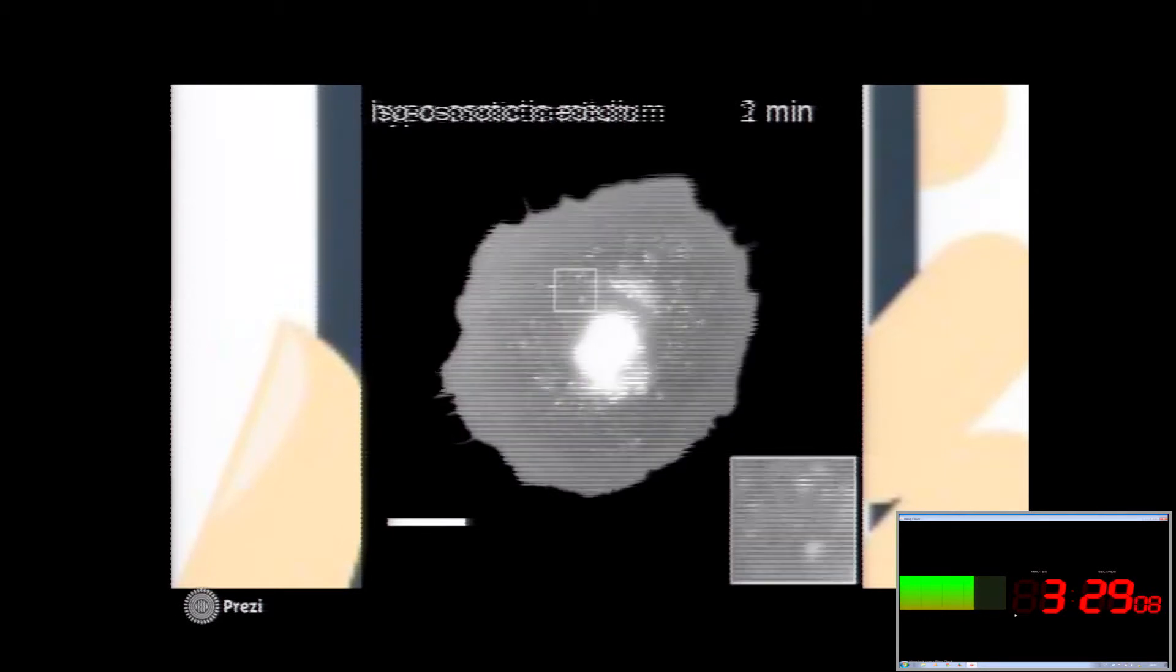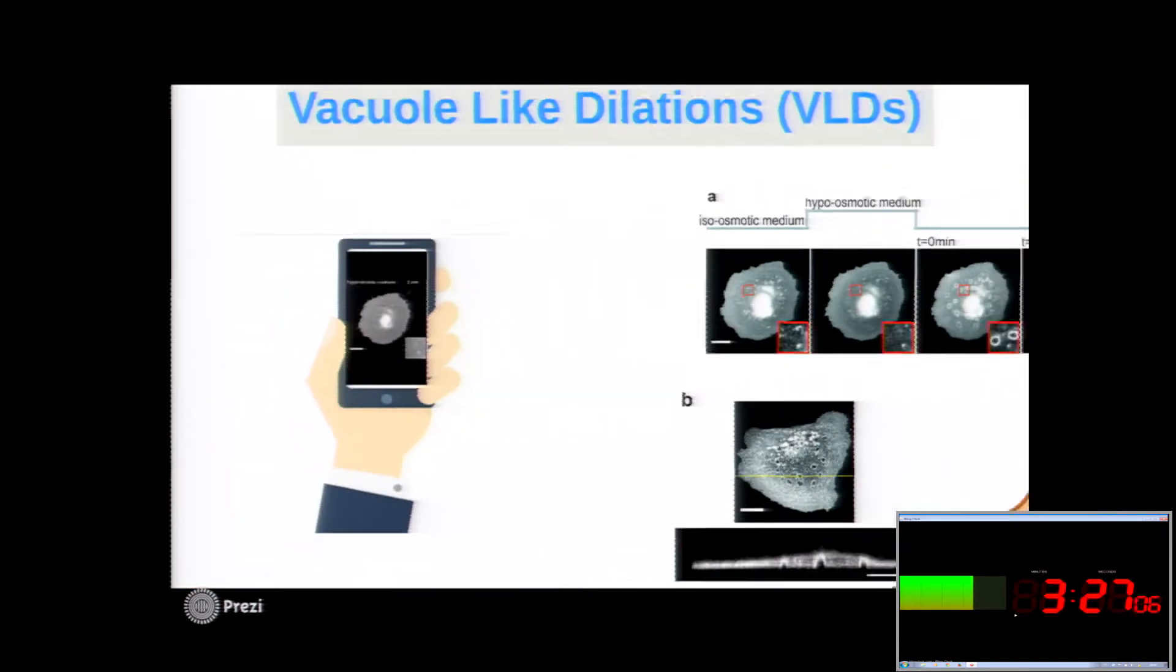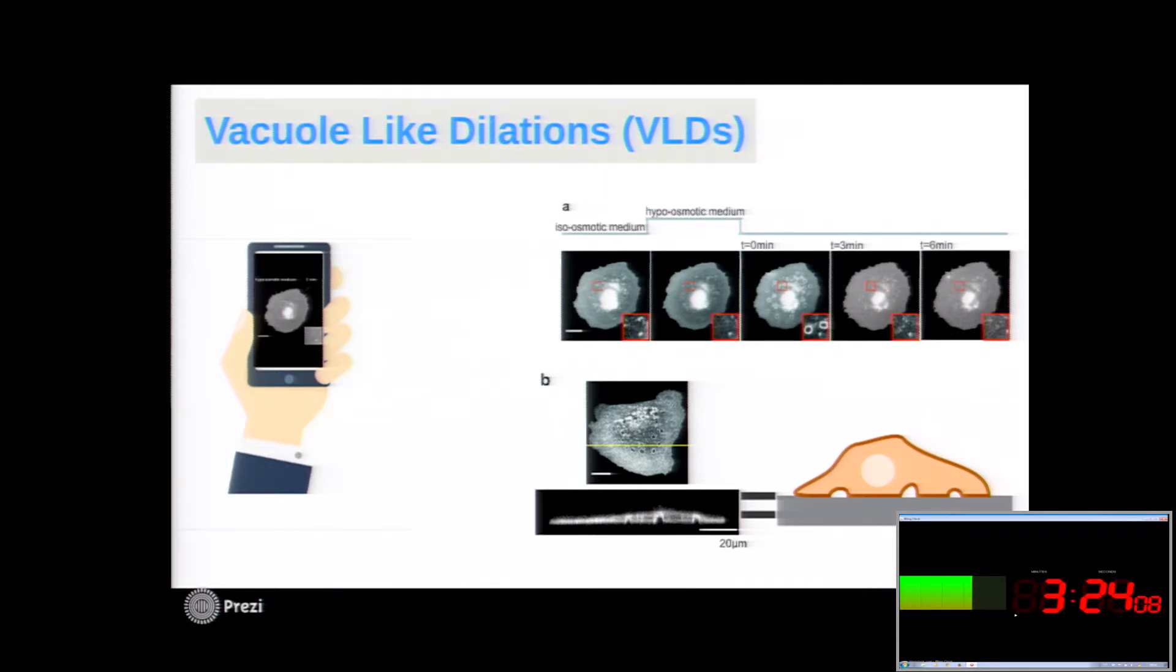This time, however, those plasma membrane invaginations are much larger, but still they are distributed in the basal part of the cell. We call them vacuolar-like dilations or simply VLDs.